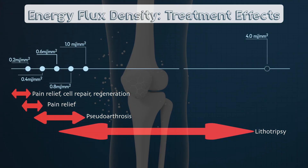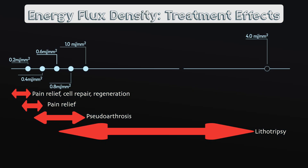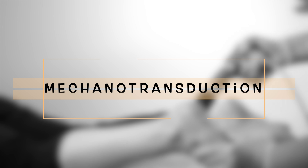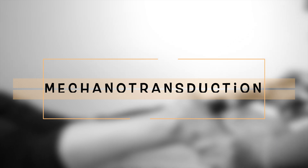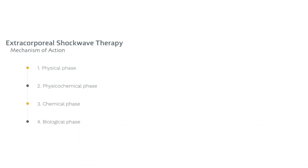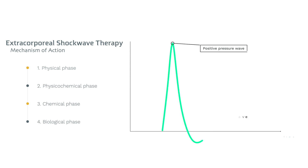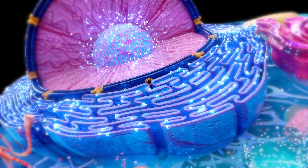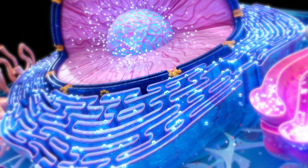Before we can understand why these energies are used for these conditions and whether they're actually effective, we first need to understand extracorporeal shockwave therapy's mechanism of action, delving into the mechanotransduction phenomenon. Shockwave's mechanism of action takes the form of a four-step sequence. In the first step, the physical phase, shockwaves are delivered to the body, which creates a realm of positive pressure, directing their absorption, reflection, and transmission through the tissues and cells. Then, in the physiochemical phase, the initial physical stimulus leads to a biochemical response, and biomolecules like adenosine triphosphate or ATP are released, causing cell signaling pathways to be activated.